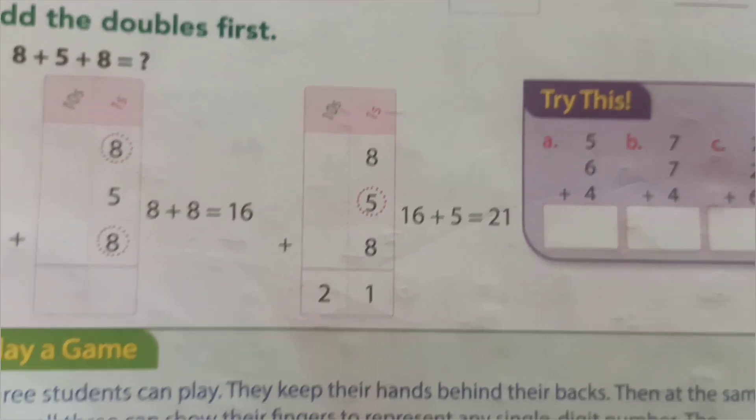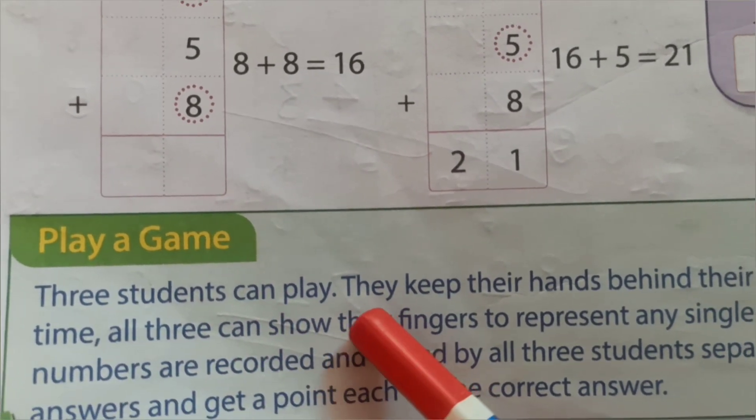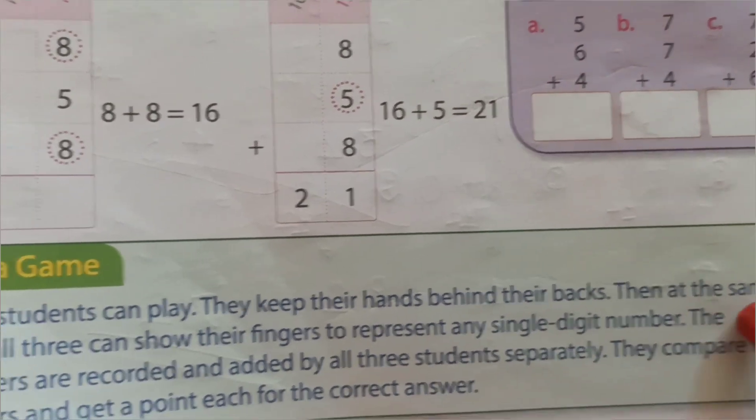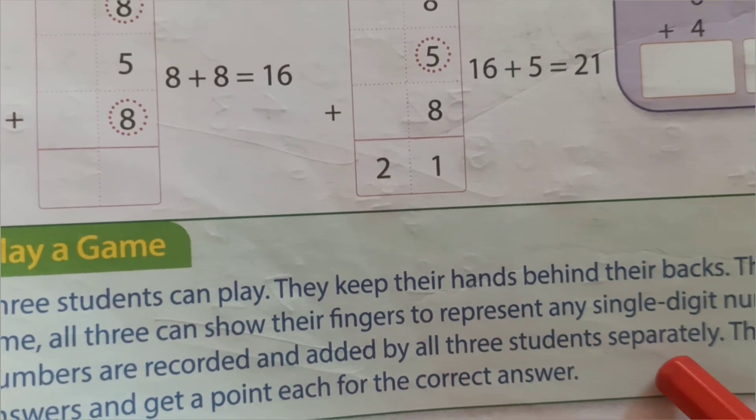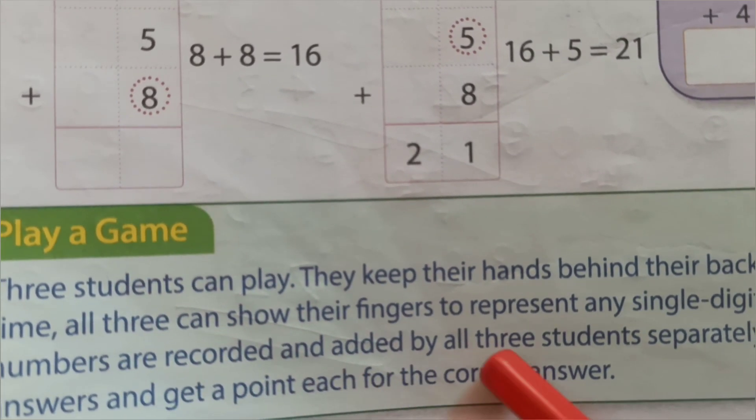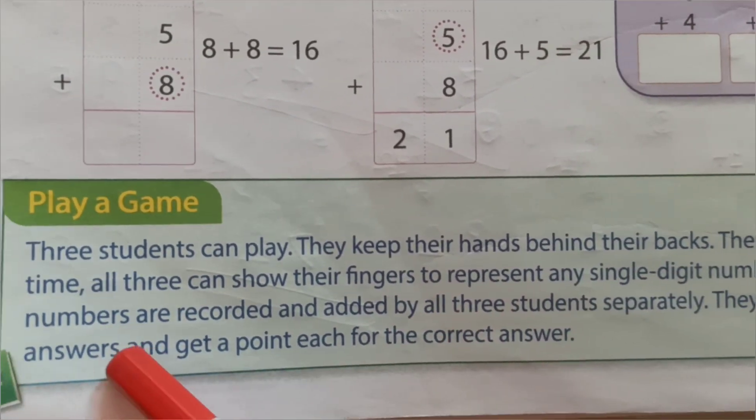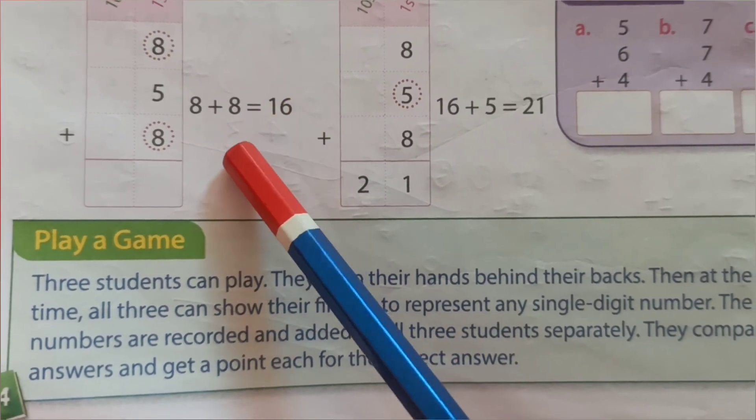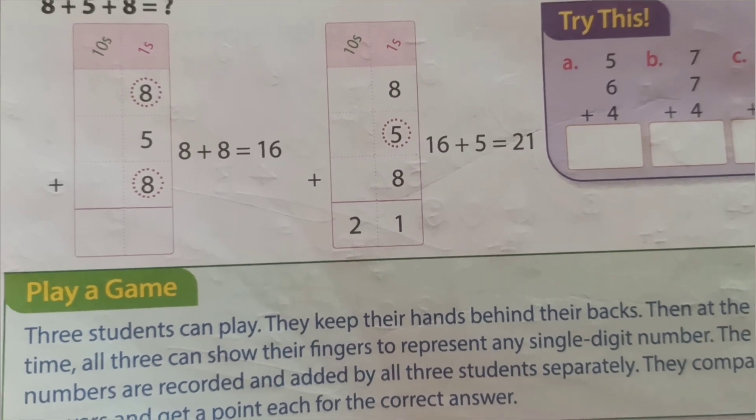We solve on a board. First, we read here. Play a game. Three students can play. They keep their hands behind their backs. Then at the same time, all three can show their fingers to represent any single digit numbers. The numbers are recorded and added by all three students separately. They compare their answers and get the point each for the correct answer.